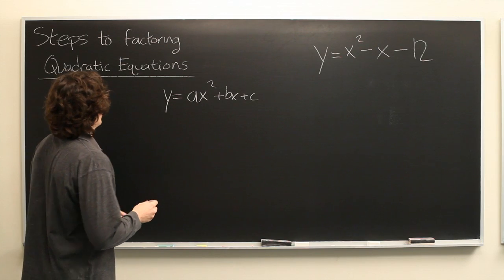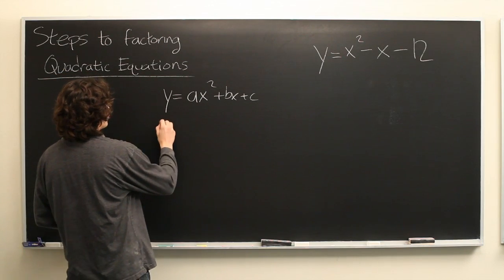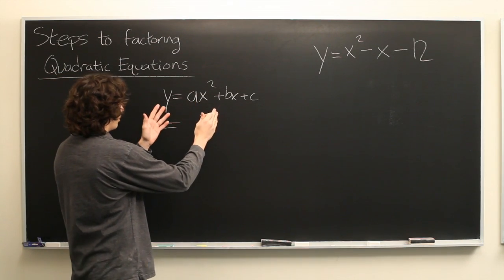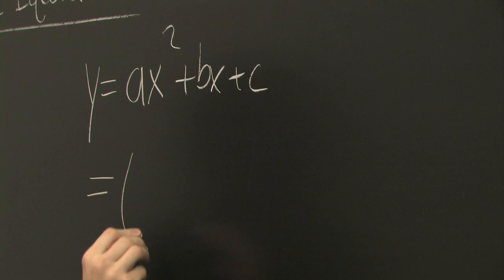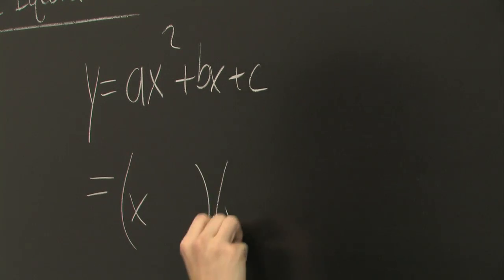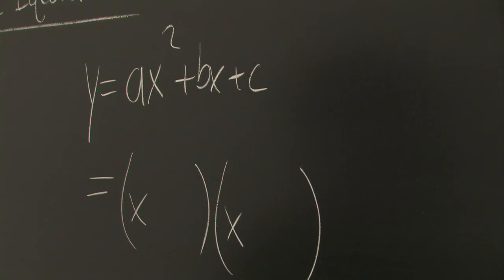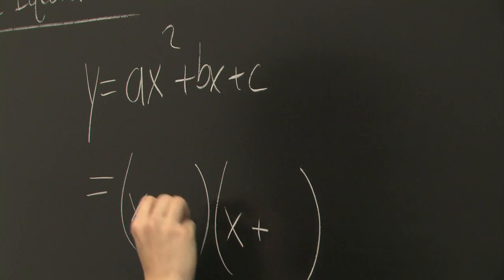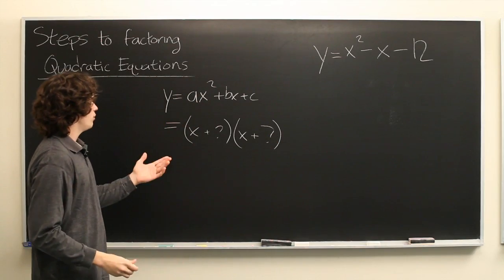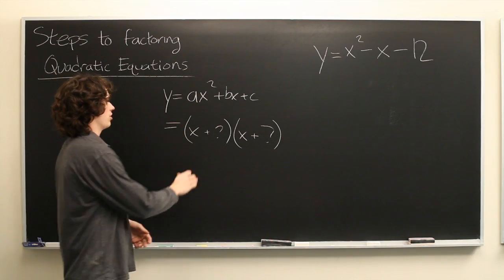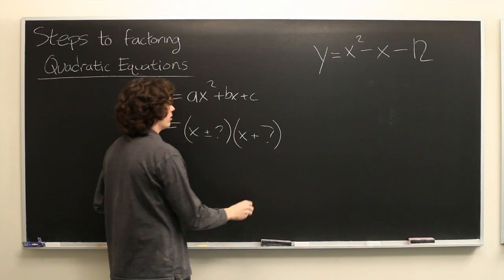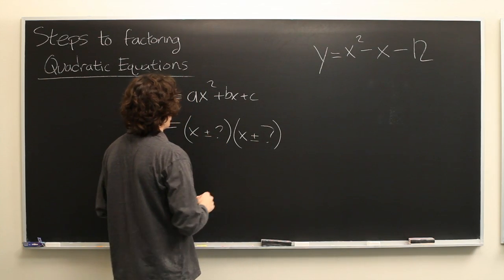What we want to be able to do is to write this same formula in a different way — as two factors with just x plus or minus some quantity, times x plus or minus some other quantity.